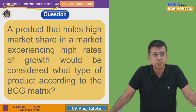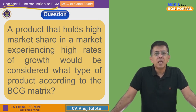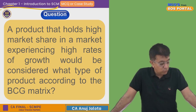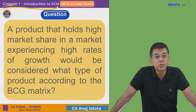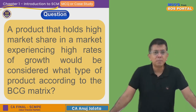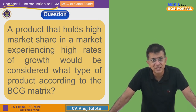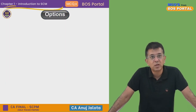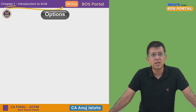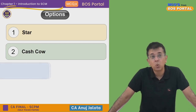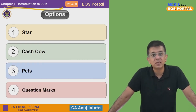An interesting question: a product that holds high market share and is experiencing high rates of growth would be considered as which type of product according to the BCG Matrix? BCG stands for Boston Consulting Group — a consultancy firm that created this matrix. In the BCG Matrix there are four types of products: Star, Cash Cow, Pets, and Question Mark.